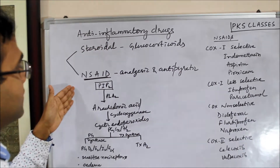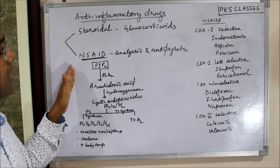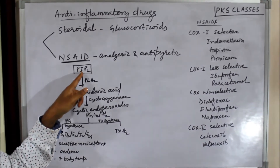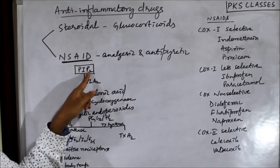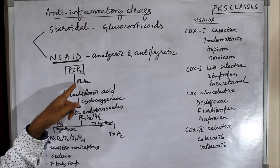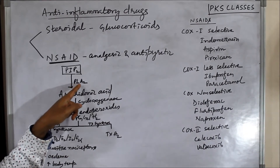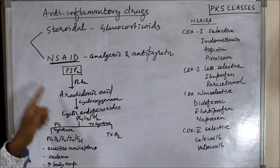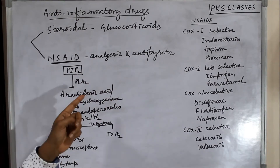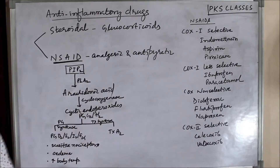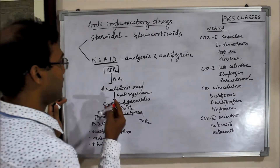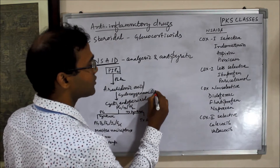Let us discuss the mechanism. As we have already studied before, phosphatidylinositol diphosphate is present on the cell membrane. When the enzyme phospholipase A2 acts on PIP2, there will be production of arachidonic acid. Arachidonic acid follows two pathways: the cyclooxygenase pathway and the lipoxygenase pathway. The cyclooxygenase pathway is commonly called the COX pathway.